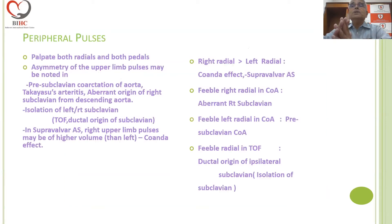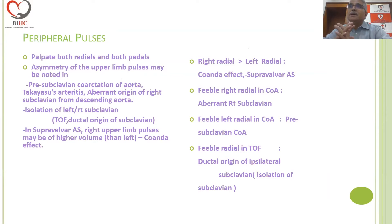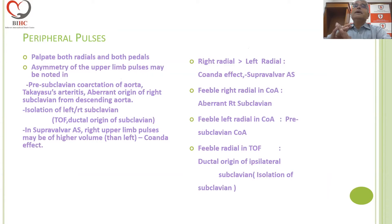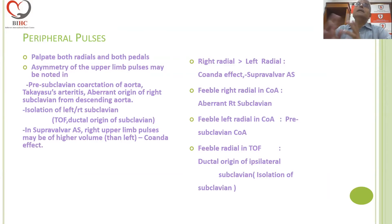When you move to peripheral pulses, remember: whenever you are palpating the radial pulse, have your other hand on the pedal pulses. Get into the habit of feeling the radial pulse along with the pedal pulses. When you feel the radial pulse, also feel the opposite side pulse. In a given situation, look for all pulses — palpate both radials and pedals. Asymmetry of the upper limb pulses, with one radial pulse being stronger or weaker than the other, may be a feature of certain diseases.